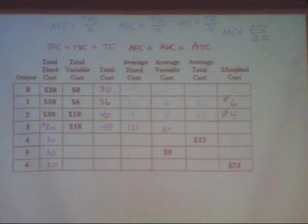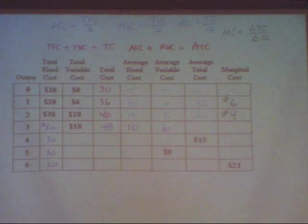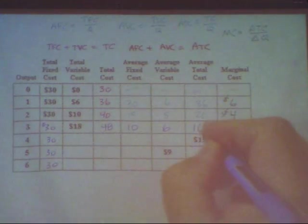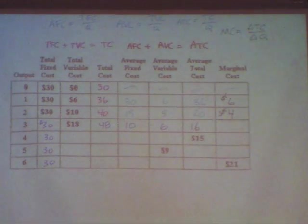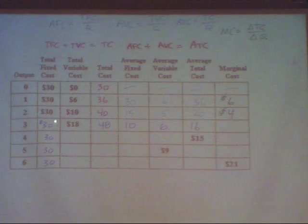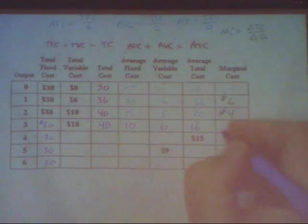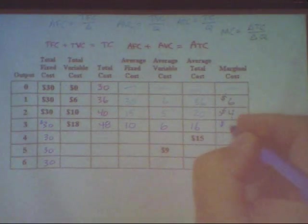There are two ways to get the average total cost: total cost divided by quantity (48 divided by 3), or average fixed cost plus average variable cost — either way you get 16. The marginal cost is the additional cost to make the third unit of output. When the third unit is produced, costs go from 40 to 48 — that's an increase of $8, which is the marginal cost.